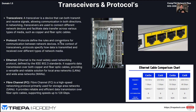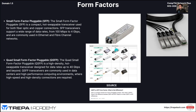Fiber Channel is highly used in SANs — Storage Area Networks. Think of large NetApp clusters with rows and rows of solid-state drives or hard drives. It supports speeds up to 128 gigabits per second.